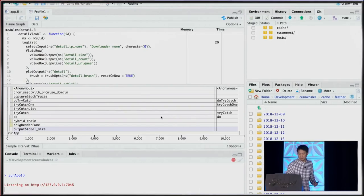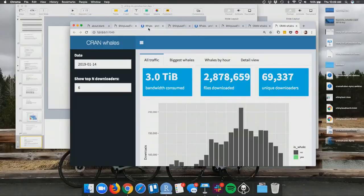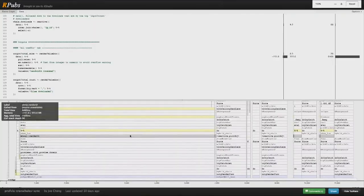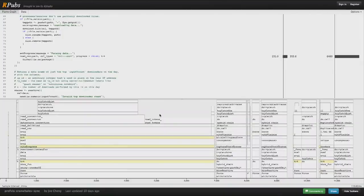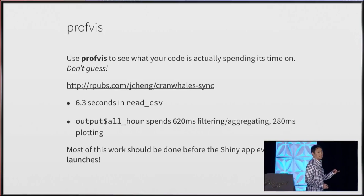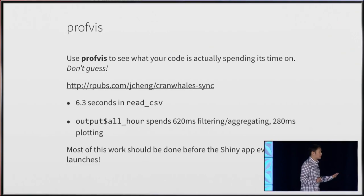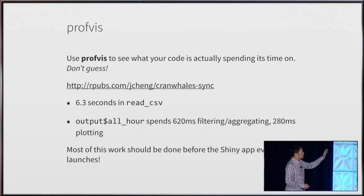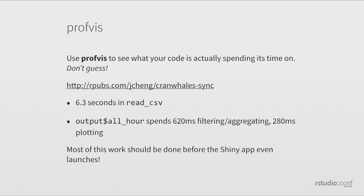I've prepared a profile in advance. Once you learn how to read these graphs, the answers are right there — there's no reason to guess what the time is being spent on. This visualization tells us it's taking 6.3 seconds to read the CSV file alone — just the parsing, 6.3 seconds, way too long. When calculating the first output, all_hour, it's taking 620 milliseconds just filtering and aggregating the data — and that's going to be the same for every user. And the plotting for just that one plot is taking a third of a second.